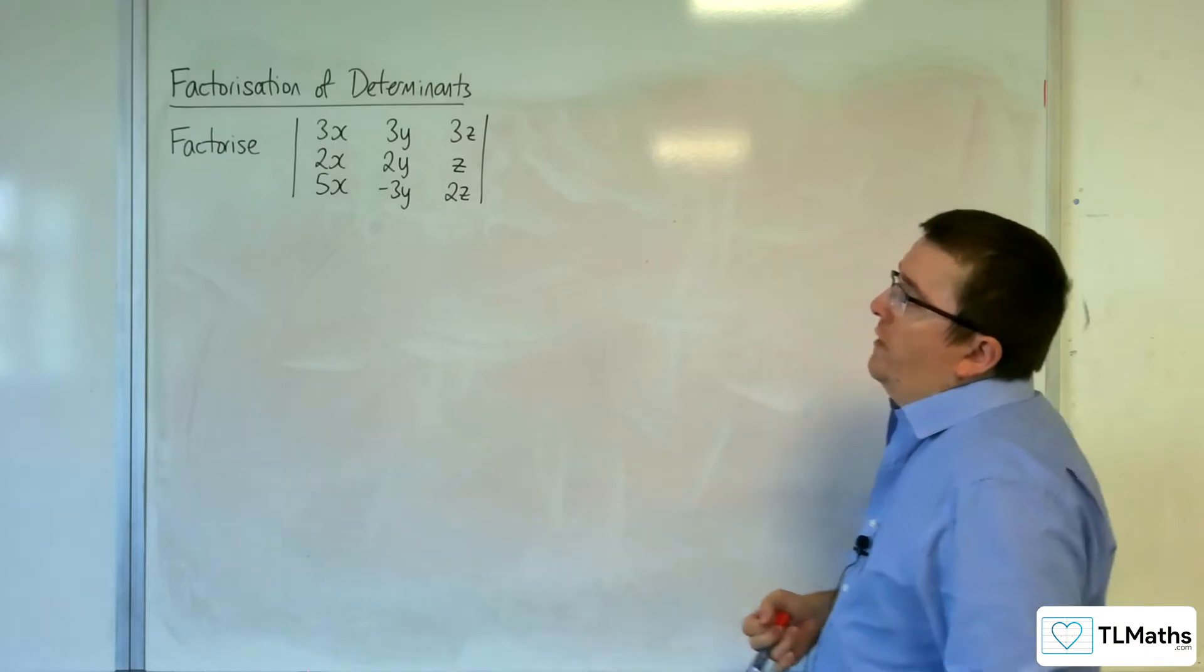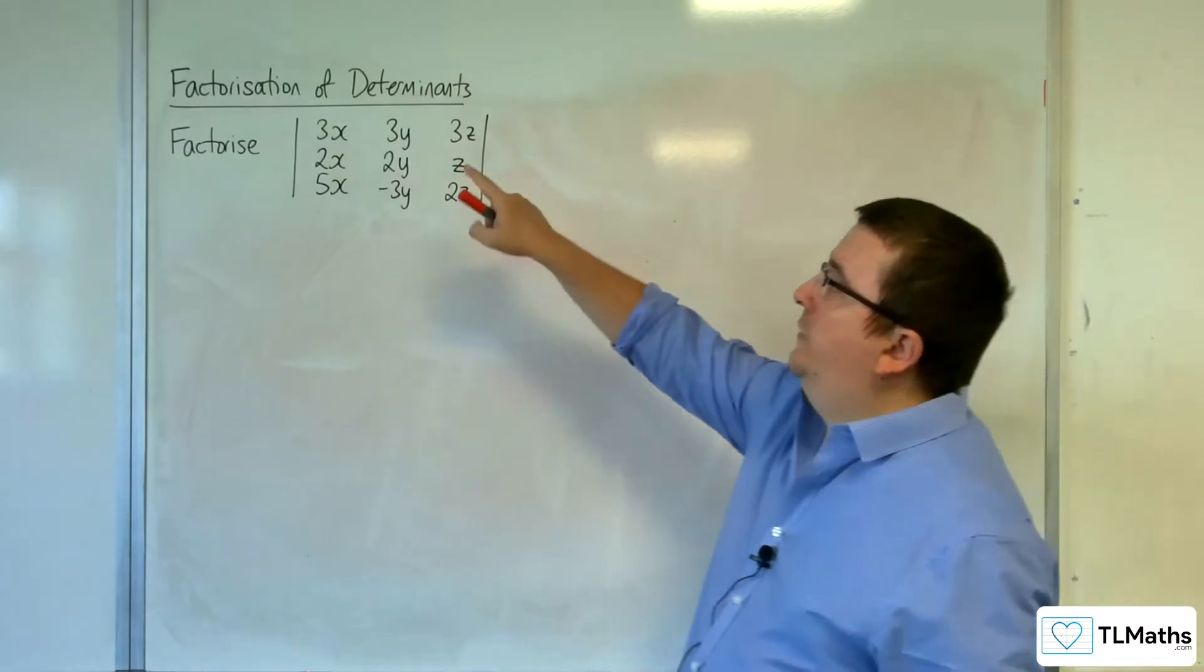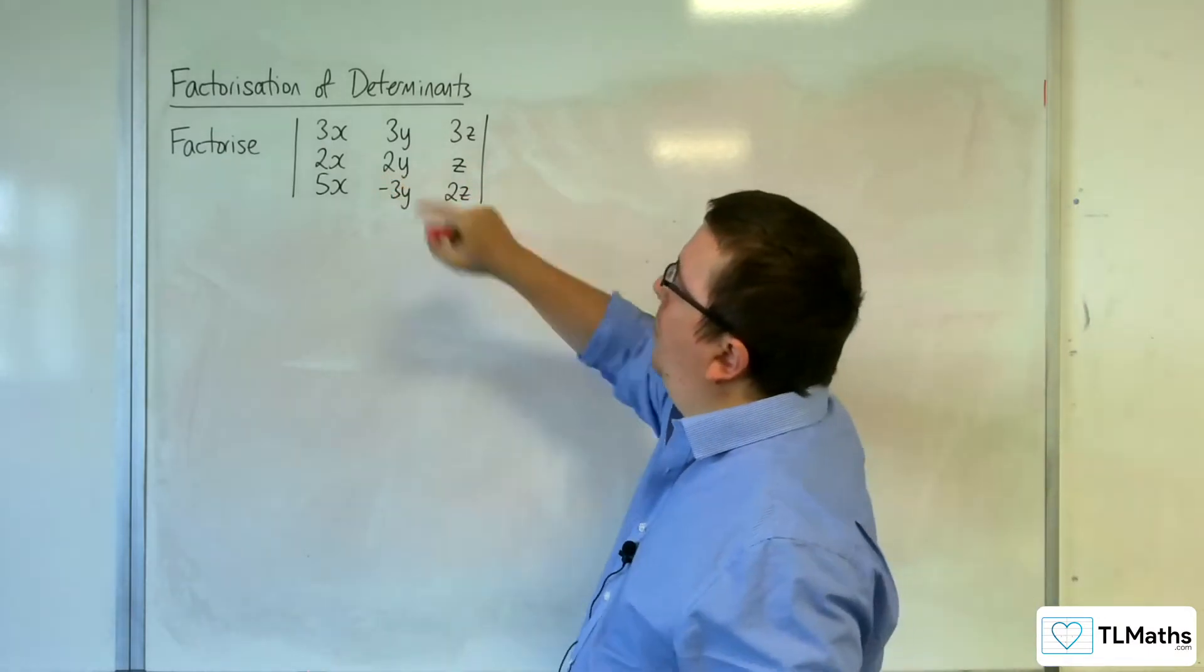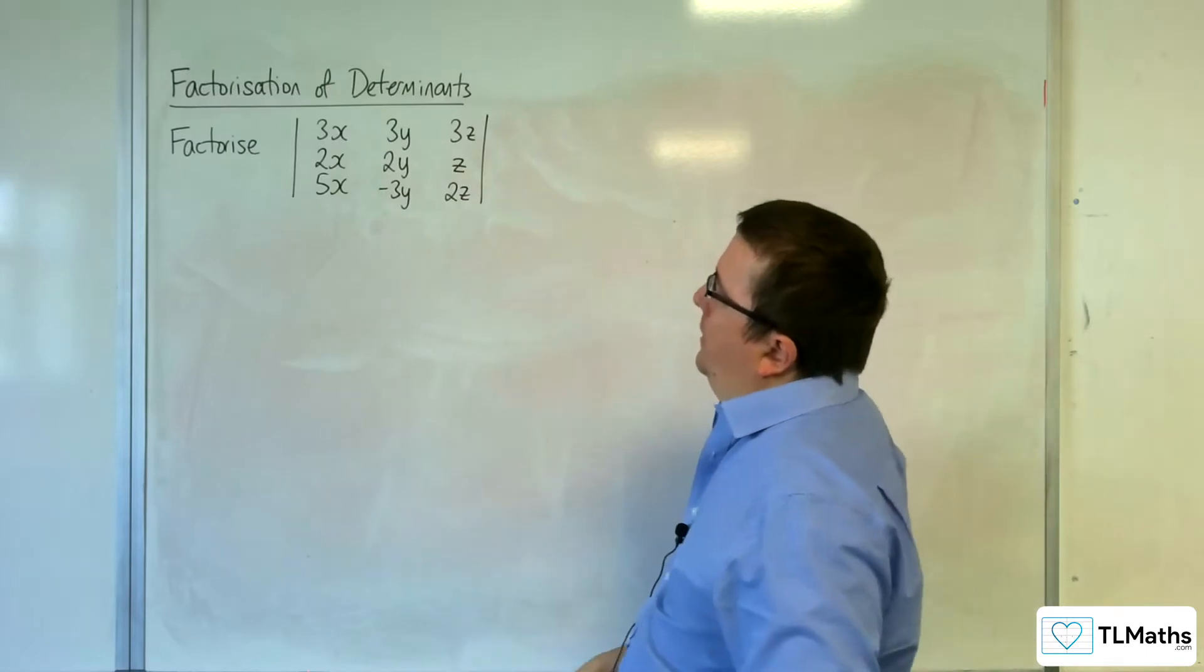So, in this example, we're going to factorise the determinant of 3x, 3y, 3z, 2x, 2y, z, 5x take away 3y, 2z.